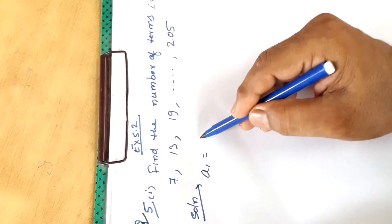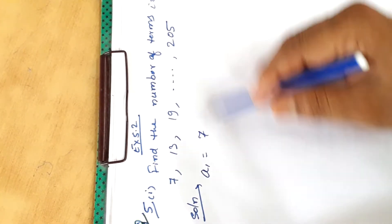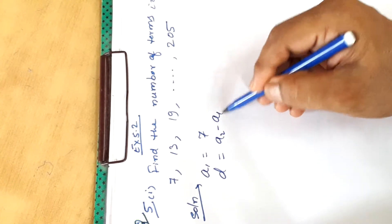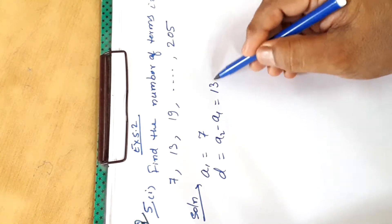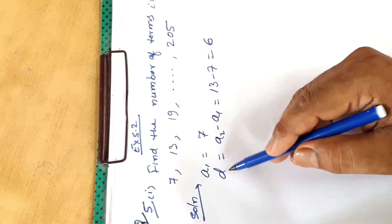We have first term A1 equals 7. We have to find number of terms. Here D we can find A2 minus A1, that is 13 minus 7, is equal to 6. A and D we have found.